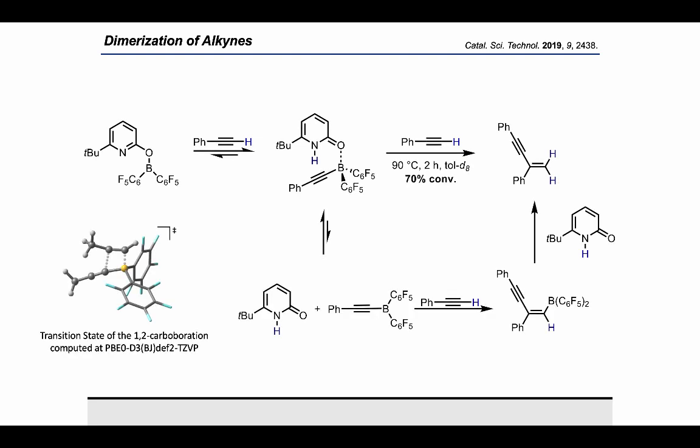According to detailed mechanistic investigations that included not only computations but also the characterization of key intermediates, the formation of the enyne commences with the dissociation of the pyridone-alkynyl borane complex. 1,2-carboboration of the alkyne by the alkynyl borane yields then an enyne borane. Again, the recoordination of the pyridone initiates a protodeboronation that yields the enyne. Since this protodeboronation regenerates the pyridonate borane, it is again possible to close a catalytic cycle.